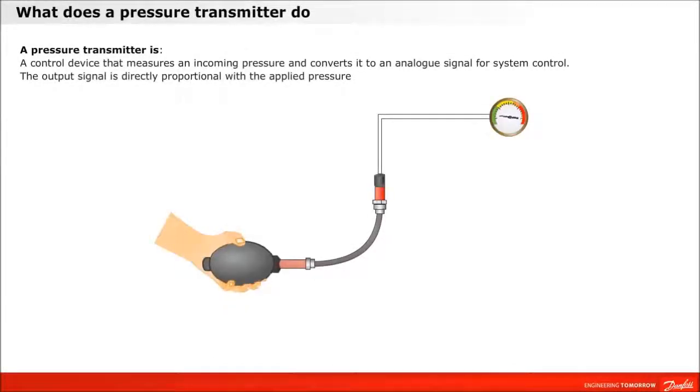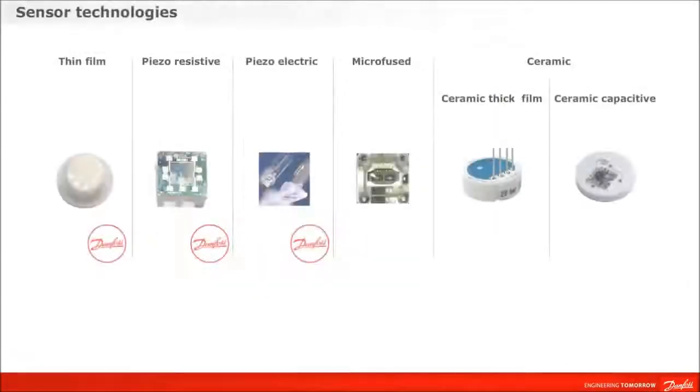The illustration shows that the harder the ball is squeezed, the higher the pressure is to the transmitter, and this is directly proportional to the output signal.